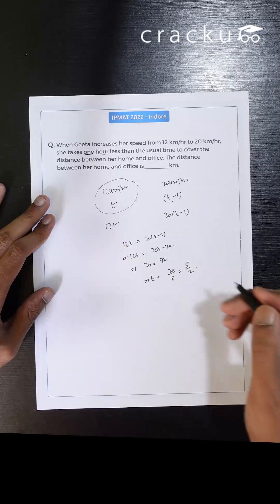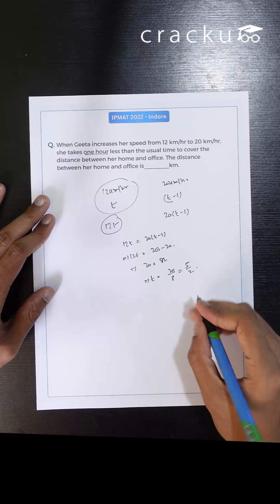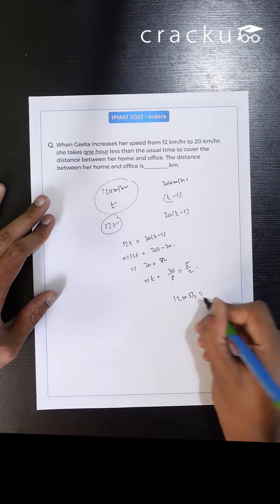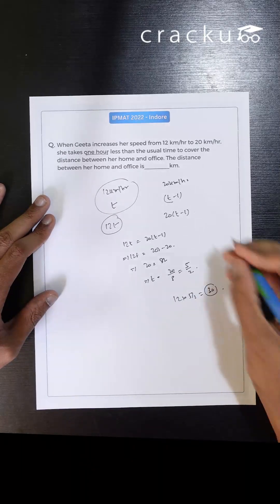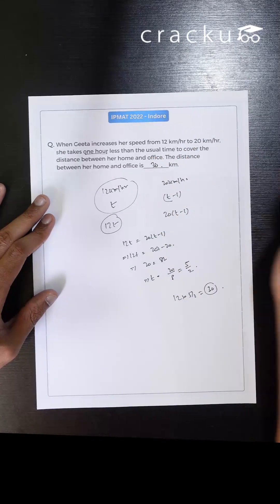Now if I put t equals 5 by 2 over here, what is the value? The required distance is 12 into 5 by 2, which is 30. So the correct answer is 30 kilometers.